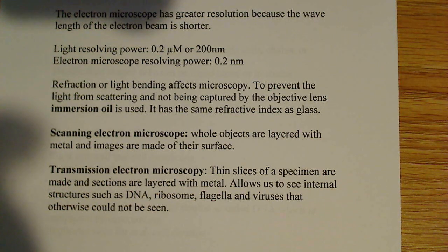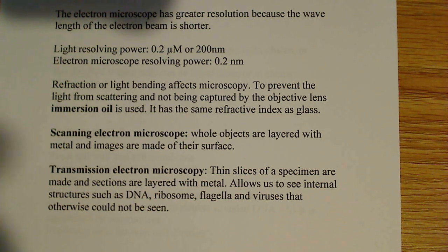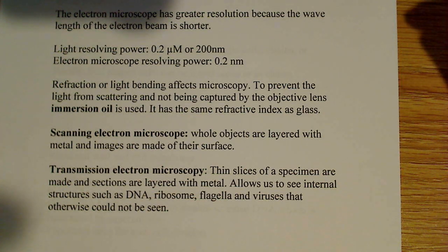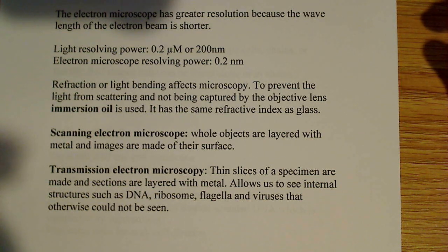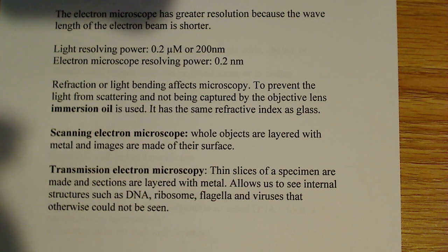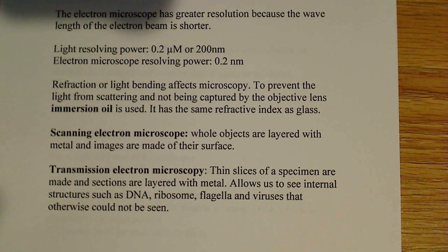We use immersion oil for that reason. With the scanning electron microscope, if we want to look at the surfaces of objects, the whole surface is layered with some kind of metal and images are made of the surface. With transmission electron microscopy, slices of the specimen have to be prepared, and those sections are each layered with metal. This allows us to see internal structures — DNA, ribosomes, flagella, even viruses — that otherwise would not be seen.